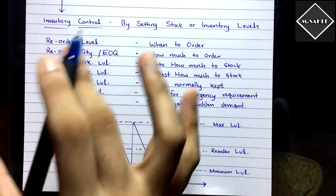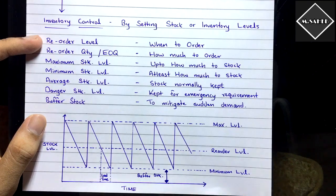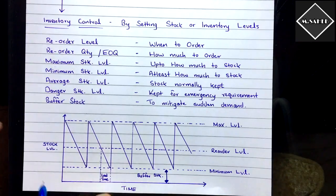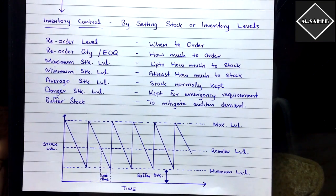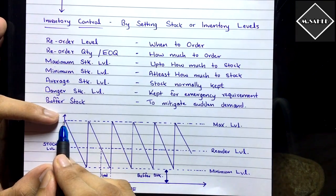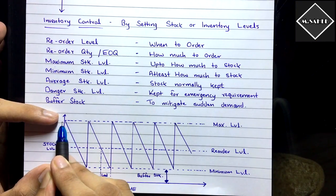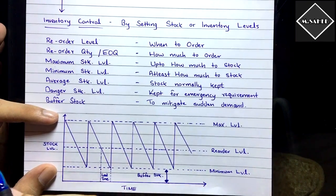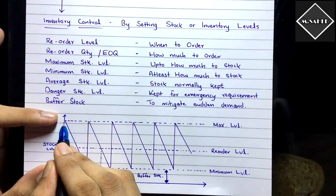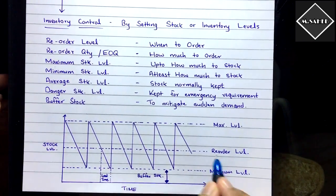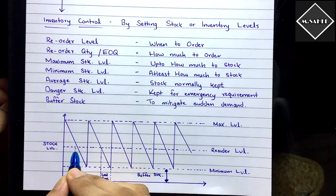Now let's understand reorder level with the help of this graph. The graph has stock level on the y-axis and time on the x-axis. First, you have stock in your warehouse. You send materials to the production department — consuming the materials — so your inventory is reducing, getting depleted, until it reaches a point called the reorder level.